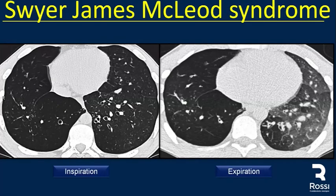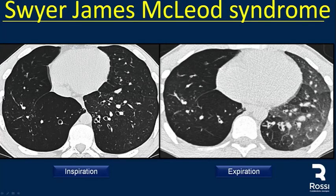Starting with Swyer-James-MacLeod syndrome, on expiratory CT we see low attenuation lung with fewer bronchials and fewer vessels. When we perform expiratory CTs, we see areas of air trapping. In the left lung, we see normal lung with areas of diminished attenuation that on expiratory CT are mainly areas of air trapping, with areas of normal lung that are more collapsed.